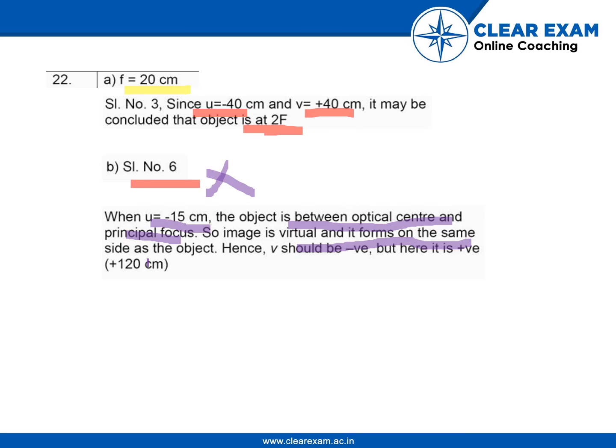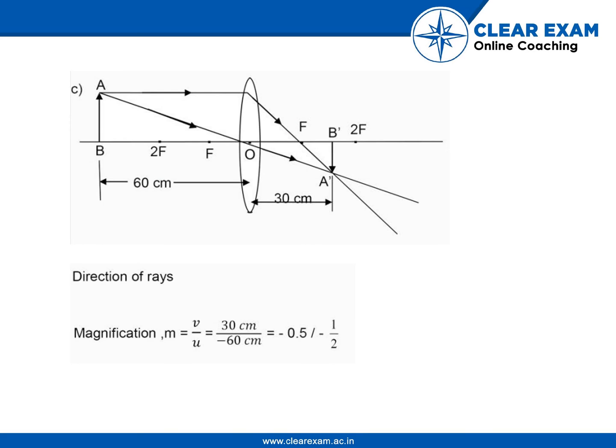Third, now we have to make a ray diagram. So this is the ray diagram. As you can see, the object is placed at 60 centimeters from the lens, and this is the principal focus. The image is formed behind the lens and it is virtual and erect.